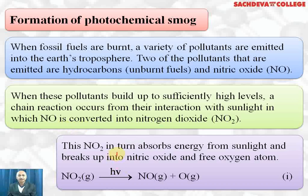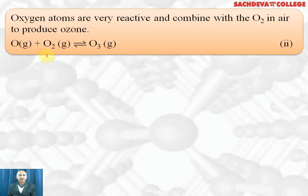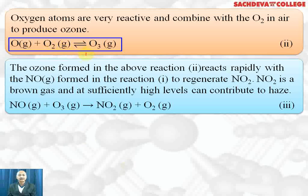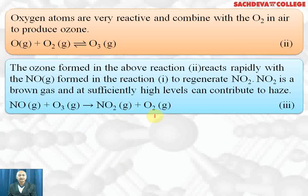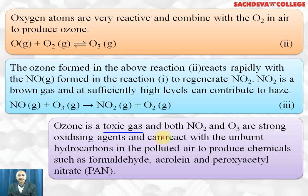Nitrogen dioxide in turn absorbs energy from the atmosphere and breaks up into NO and free oxygen. Free oxygen combines with molecular oxygen to form ozone, which is reactive and causes a lot of pollution. This ozone reacts with nitrogen monoxide to form nitrogen dioxide and oxygen, and that is responsible for a lot of pollution. Ozone is a toxic gas.